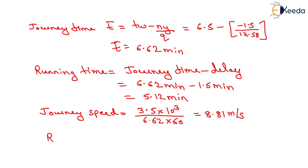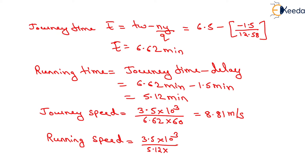Now we have to determine the value of running speed. Running speed equals length of travel, 3.5 km, so 3.5 into 10 to the power 3, divided by running time of 5.12 minutes. We want the answer in terms of seconds, so we multiply by 60, giving 11.39 meters per second. That is the journey speed and the running speed for north-south direction.